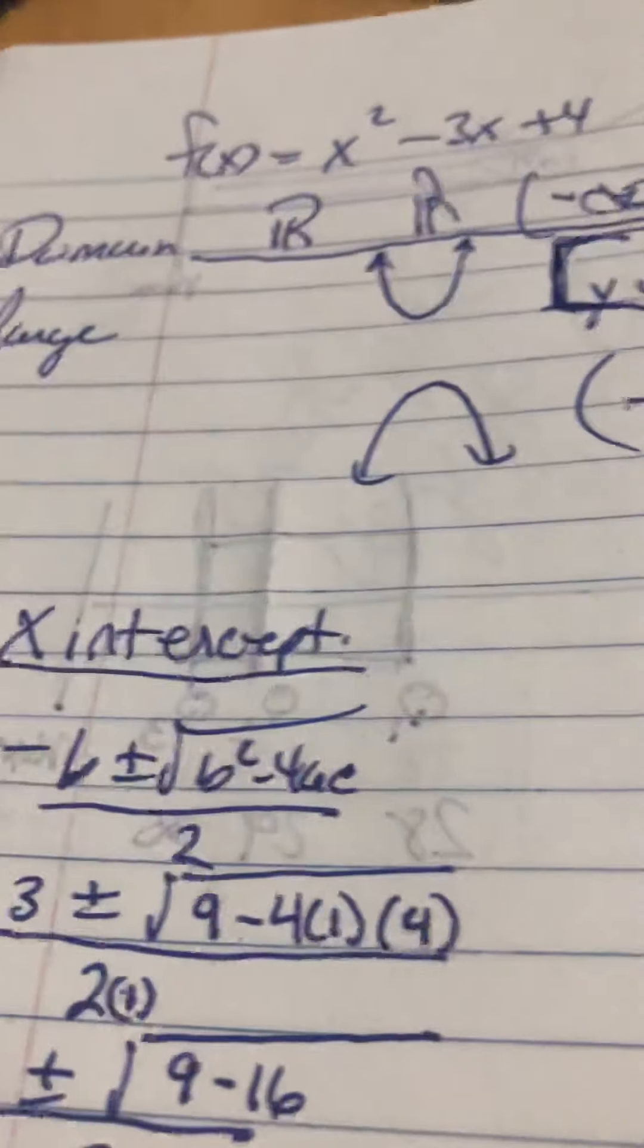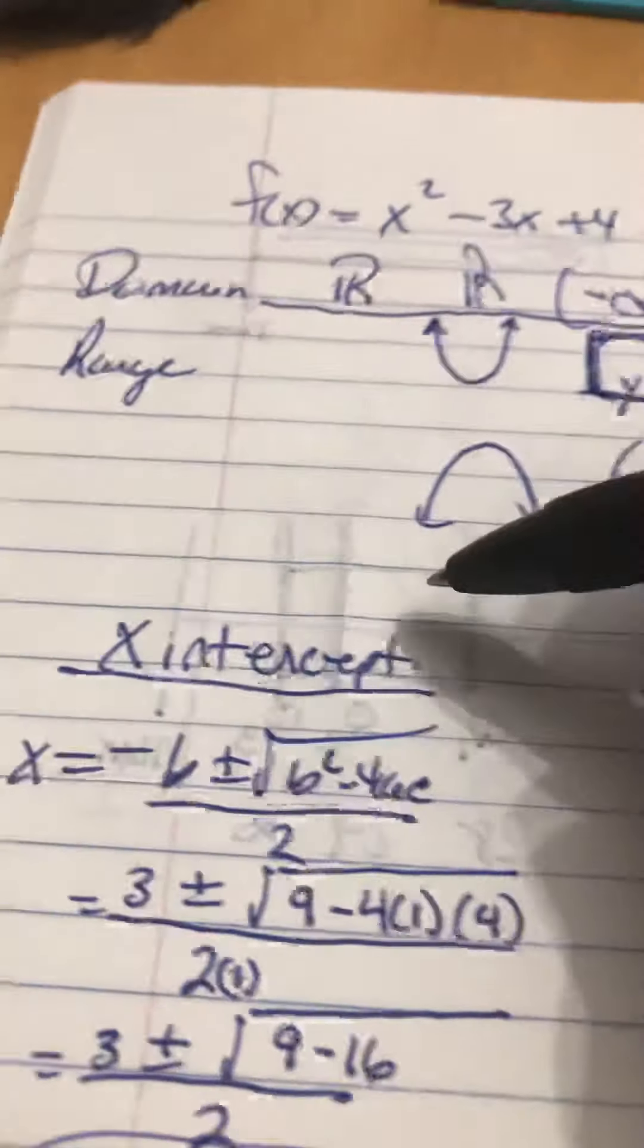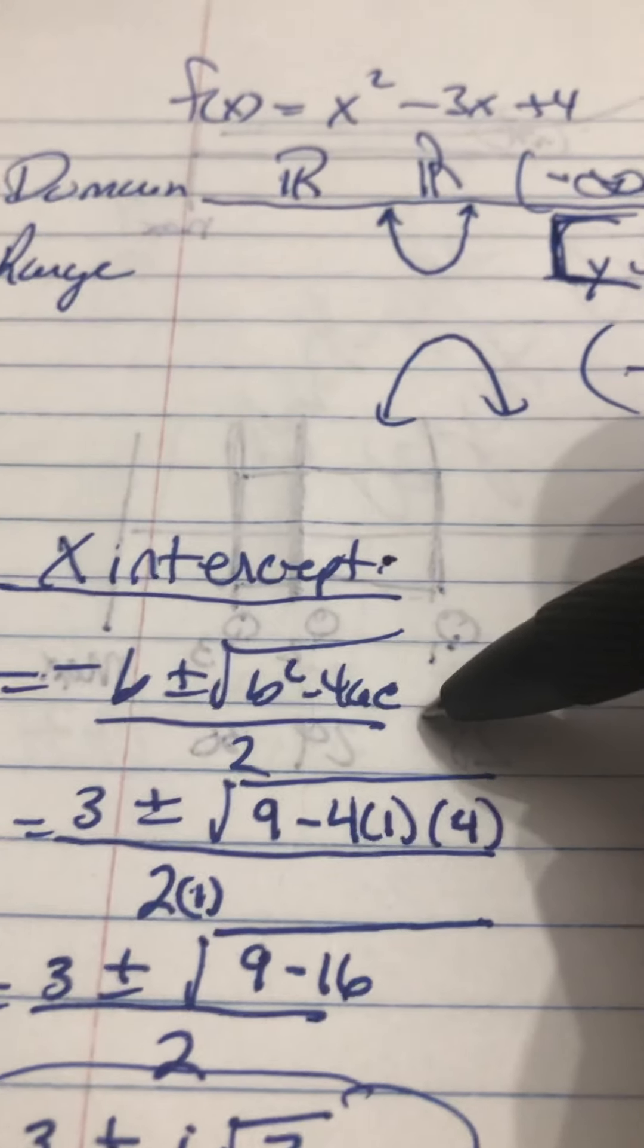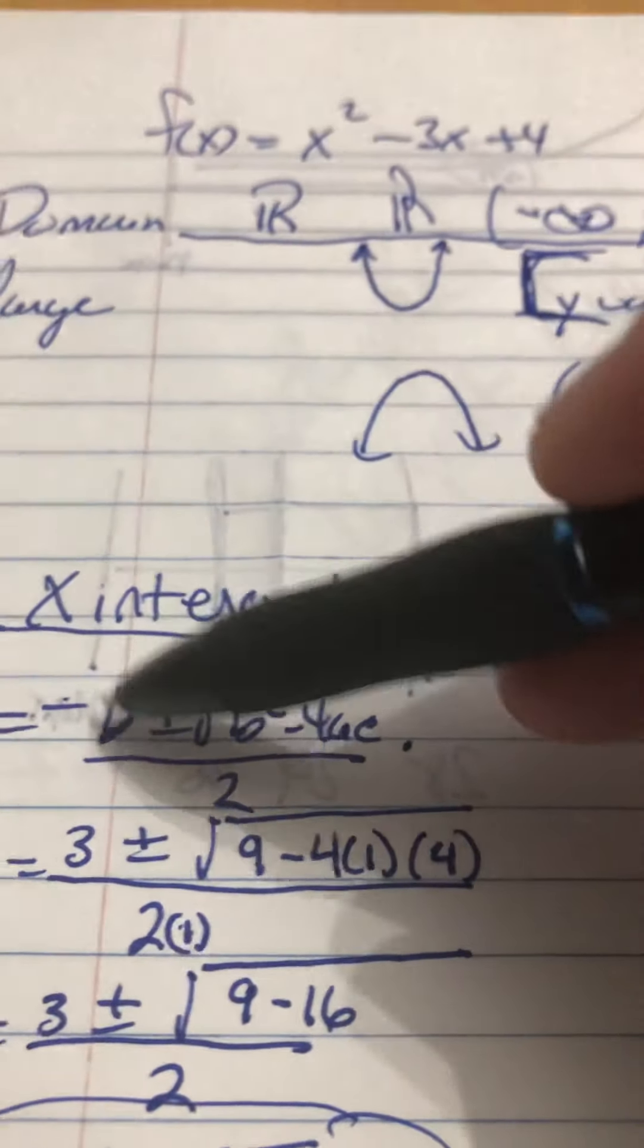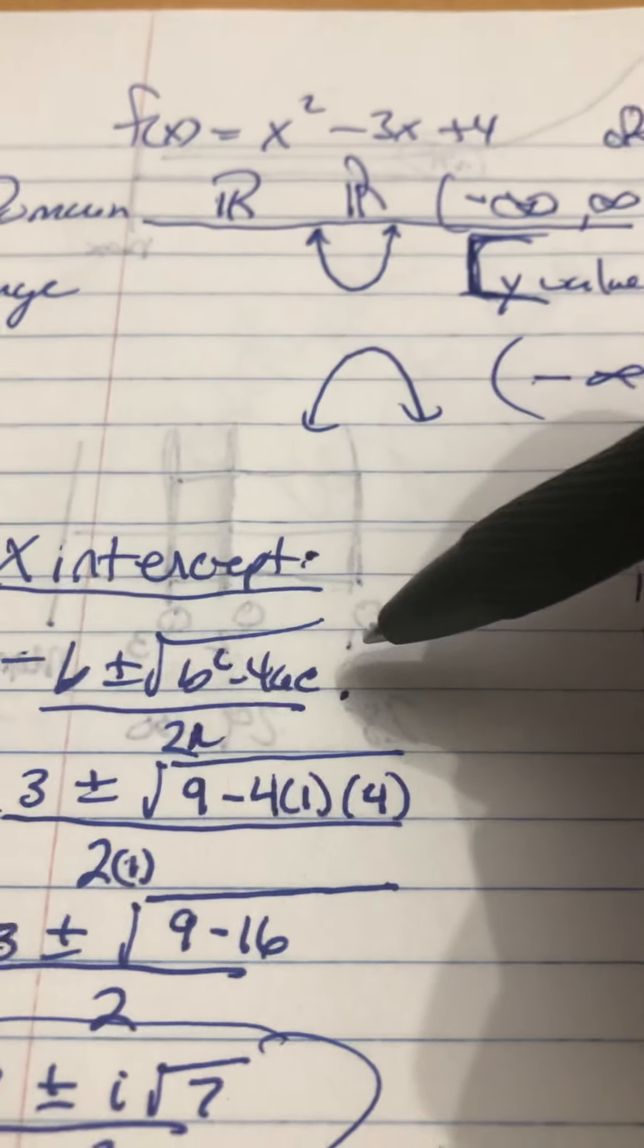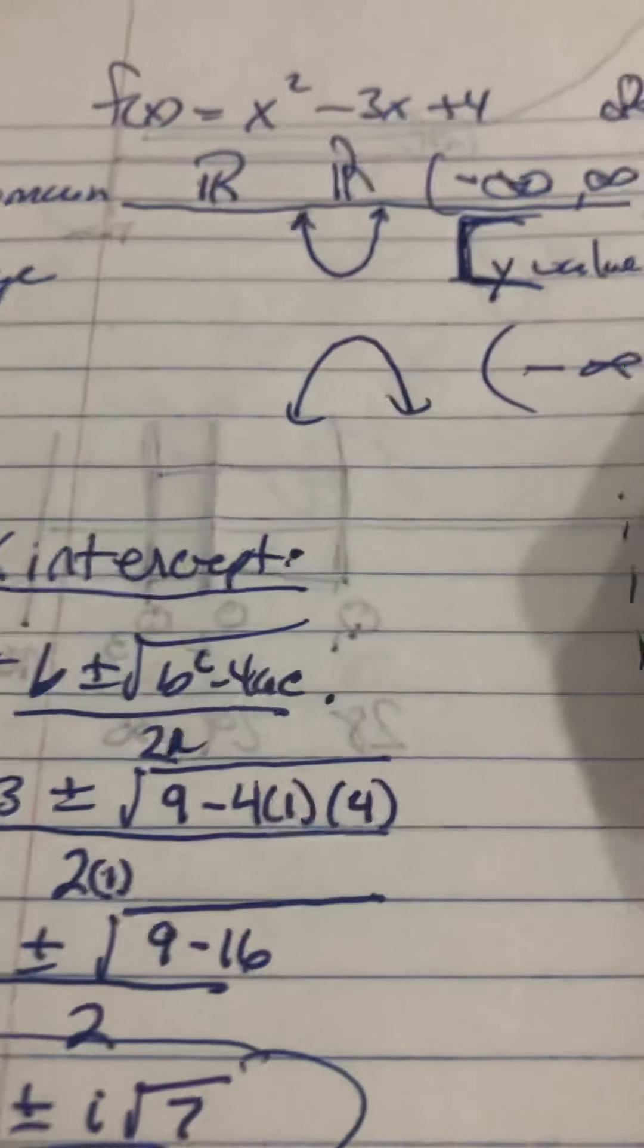Some other basic information. So, if you're in the standard form, you'll find your x-intercepts by using the quadratic. That's negative b plus or minus the square root of b squared, minus 4ac all over 2a.